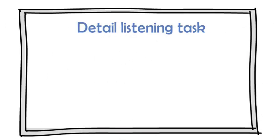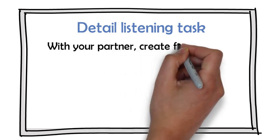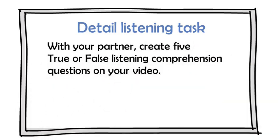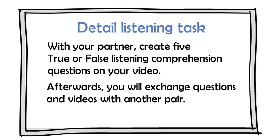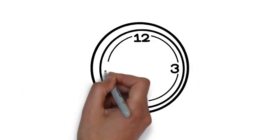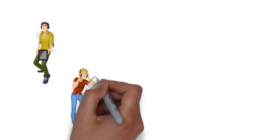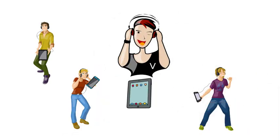Next, the detail task. Write the following instructions on the board: with your partner, create 5 true or false listening comprehension questions on your video. Afterwards, you will exchange questions and videos with another pair. And that's what they do. Here, students really have to think about their video's content and they'll need to watch it back to discuss which questions to make. While students work, you help so the questions are up to scratch. The time students need to prepare will depend on their level, so use your own judgement. Once the questions are ready, each pair swaps questions and videos with another pair. Then, everyone watches the new video and does the listening comprehension their classmates created — so we're going to need at least 5 minutes of watching time. Afterwards, students check their answers with those who wrote the questions.